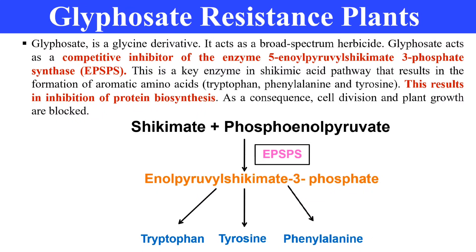However, glyphosphate is a competitive inhibitor of EPSPS — enolpyruvyl shikimate-3-phosphate synthase — so it inhibits this enzyme. With the enzyme inhibited, there is no formation of aromatic amino acids. Since these aromatic amino acids are very important for plant cells, the plant cell cannot carry out protein synthesis and it dies.